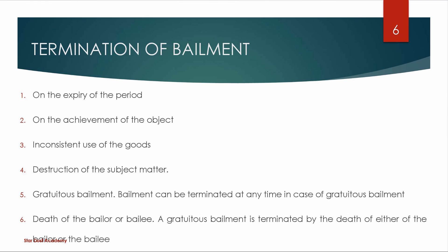Next, we will learn Termination of Bailment. On the expiry of the period, the bailment is terminated at the end of the fixed period. Next, on the achievement of the object — when the purpose is fulfilled, the bailment terminates automatically. Next, inconsistent use of the goods: if there is unauthorized use, the bailment is automatically terminated. Next, destruction of subject matter: if goods are destroyed, the bailment will automatically terminate. Next, gratuitous bailment: a bailment without any payment or consideration is terminated in the same way.